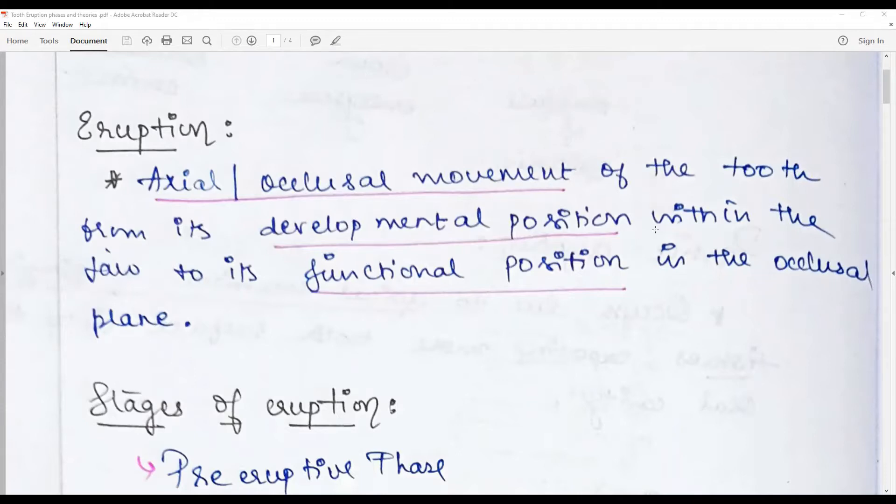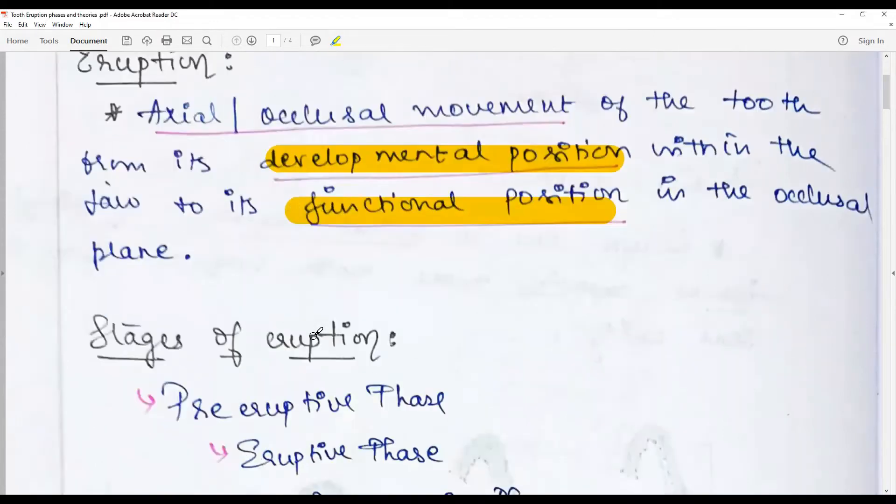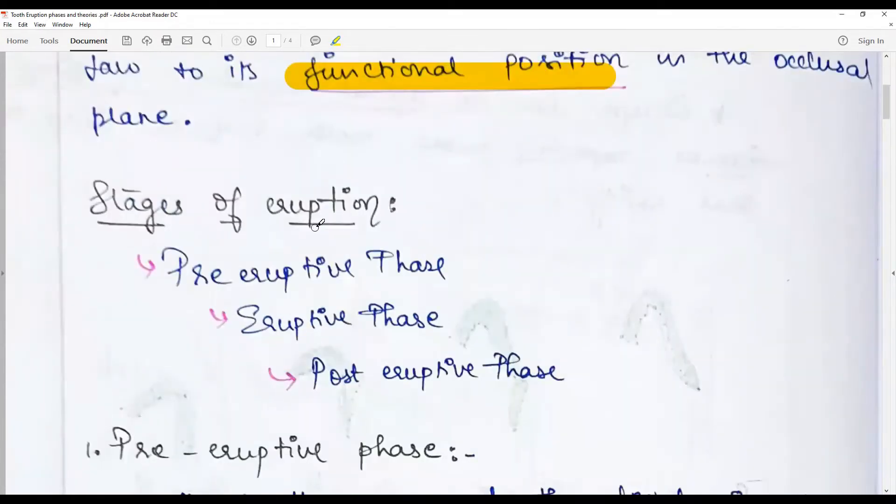Very important is from its place of developmental position to its place of functional position along the occlusal plane. The stages of eruption: we have pre-eruptive phase or pre-eruptive movements, eruptive movements, and post-eruptive movements.